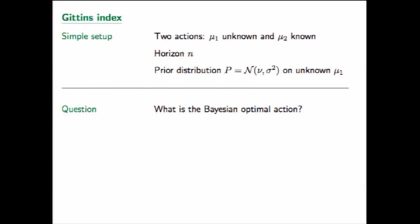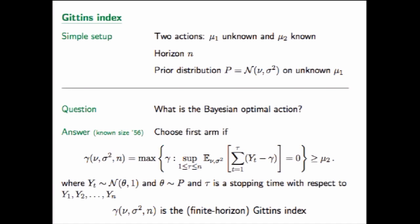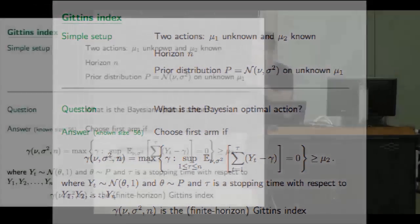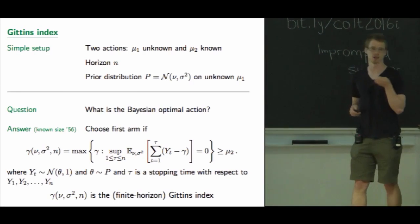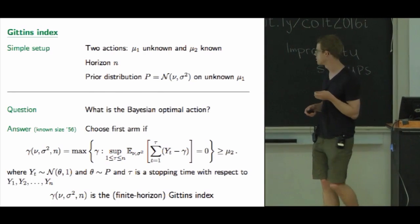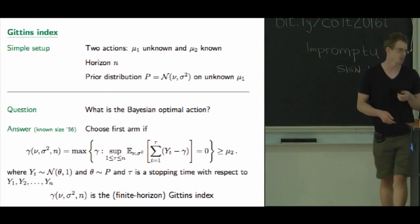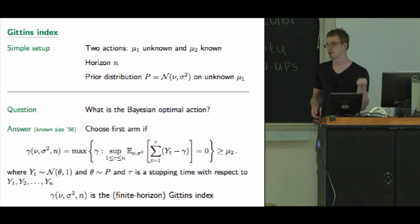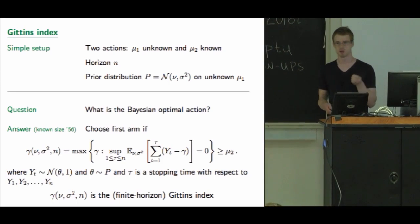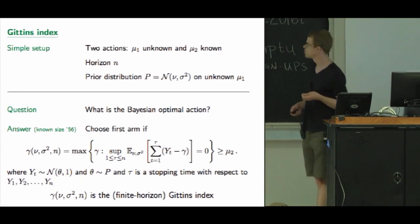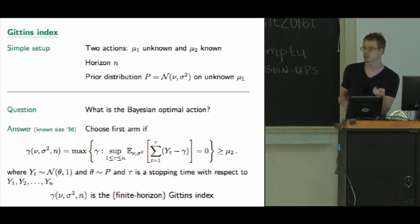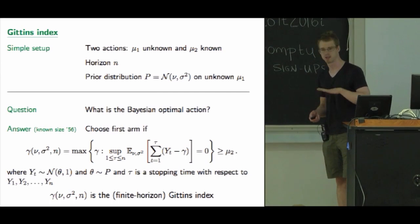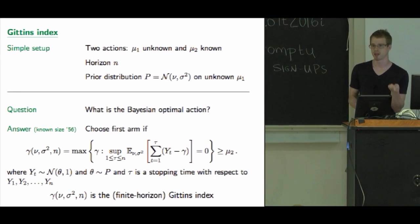The optimal Bayesian action in this setting has been known for 50 or 60 years, and is called the finite horizon Gittins index. What you want to do is choose the first action — the one whose return you don't know — as long as gamma, which depends on the prior mean, the prior variance, and the horizon, is larger than Mu2. One way to think about it: gamma is the price you would be willing to pay every round to play this game up to some stopping time of your choice. If the reward looks promising, you keep playing; if it looks bad, you stop.